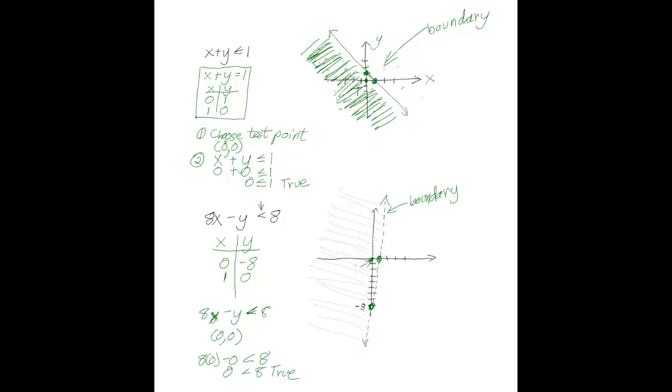You never know if you're going to get a true or a false. If you get a false, you just shade on the other side of the line. But here, my 0, 0 gave me a true answer. So, I'm going to shade on the true side. You always shade on the true side of the line. And okay, you're done. You have now graphed your second linear inequality in two variables.